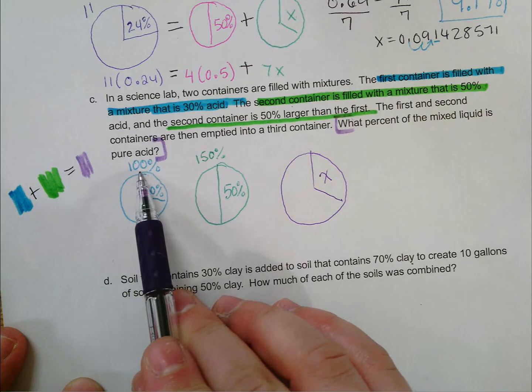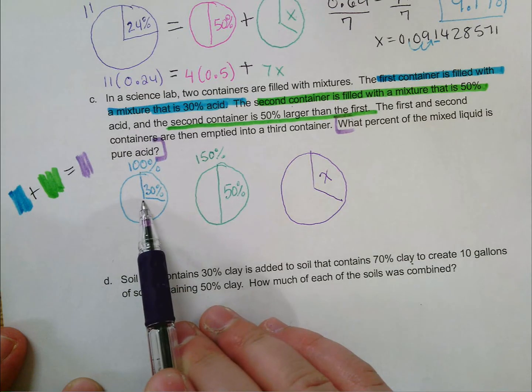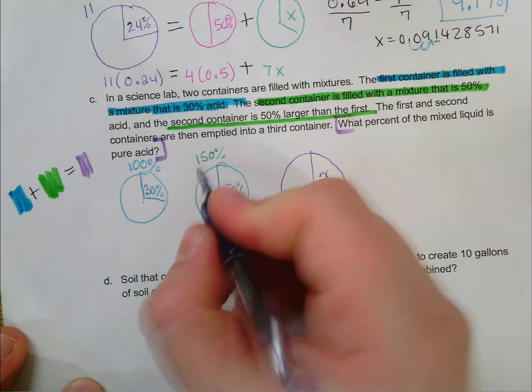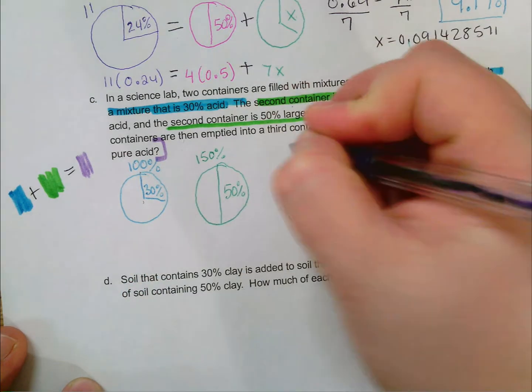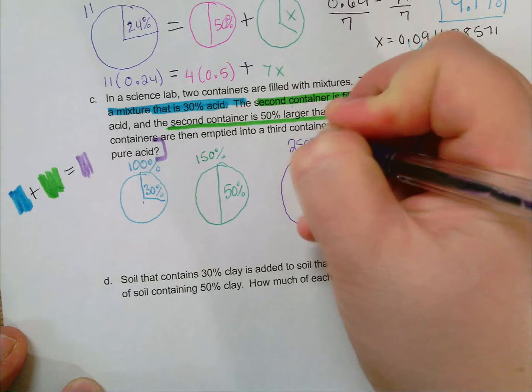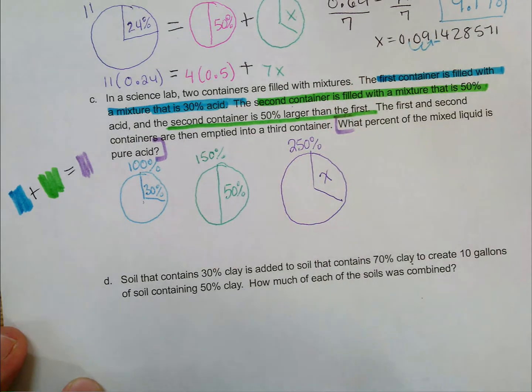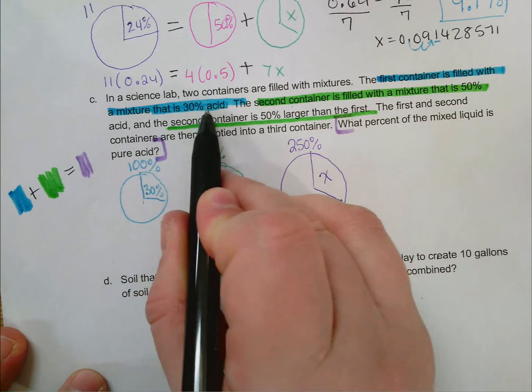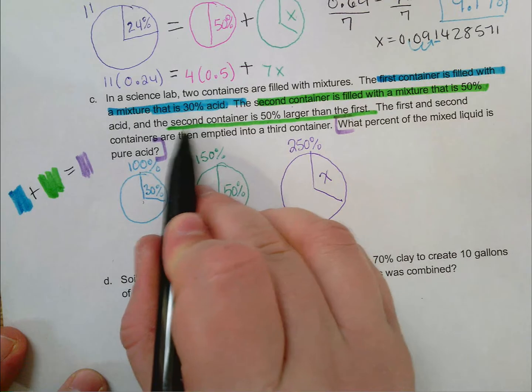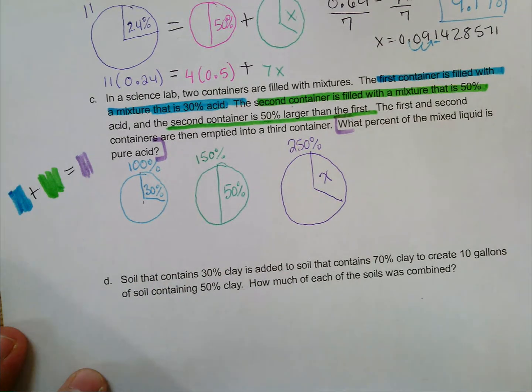Since this 100% referred to this blue circle as a whole, and this 150% also referred to this blue circle as a whole, I can add those percents, and that'll give me 250%. If that confuses you, let's work backwards. We could have picked any numbers for our scale. All we know is that the first container is filled with a mixture that's 30% acid, and also the second is 50% larger than the first.